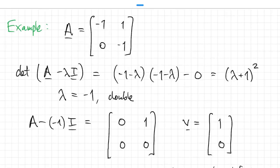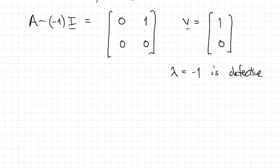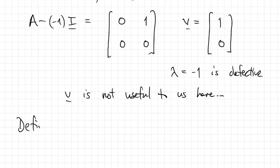We say lambda equals negative 1 is a defective eigenvalue. And we could have looked at A. A is not a multiple of the identity, so with a double eigenvalue, that means it must be defective when it's 2 by 2. V turns out not to be useful to us at all in this process.